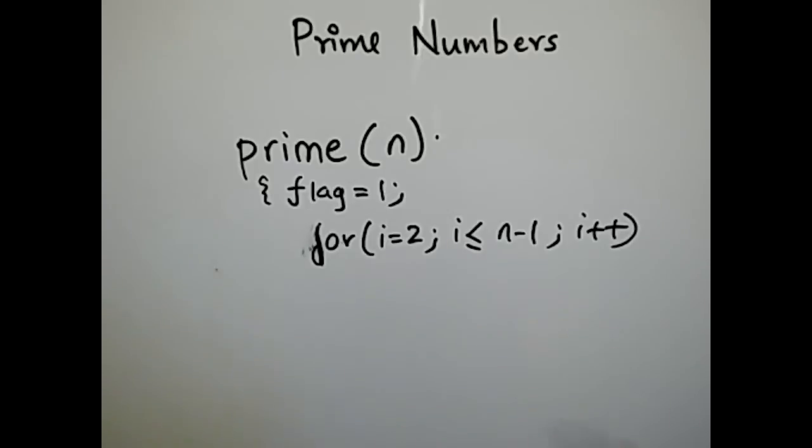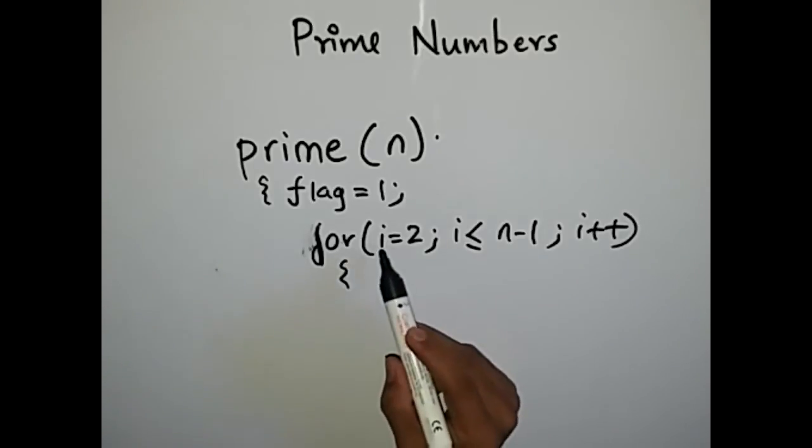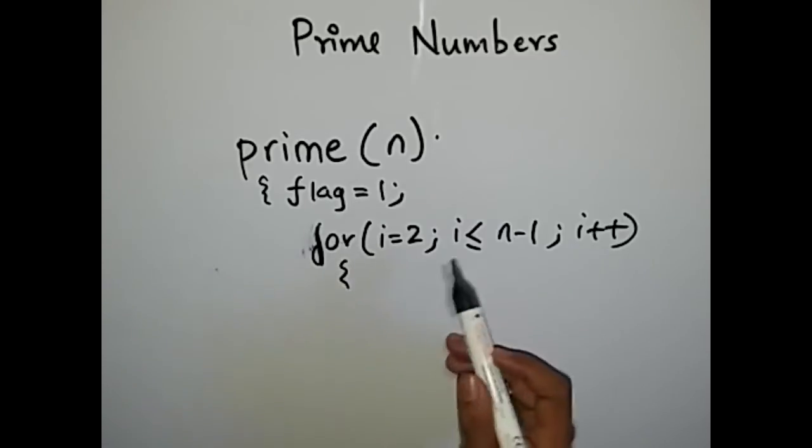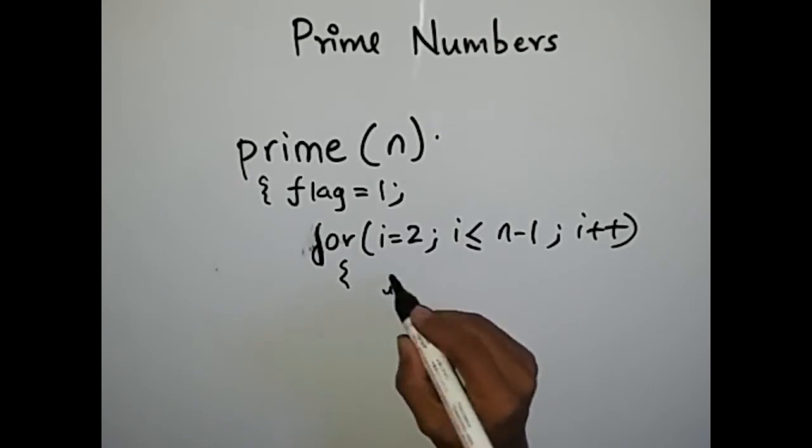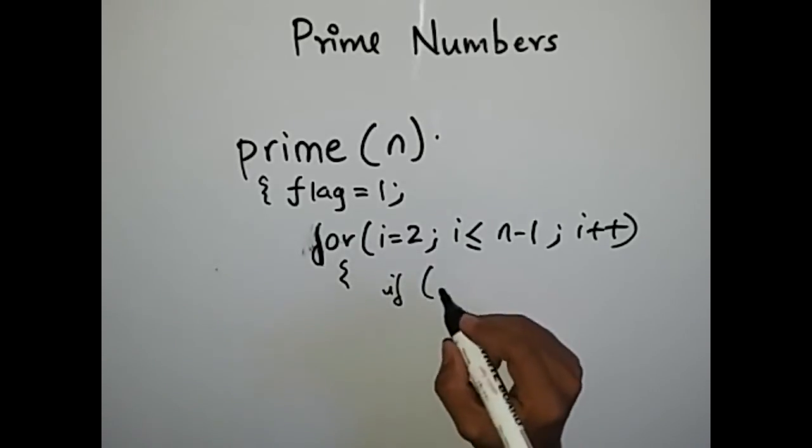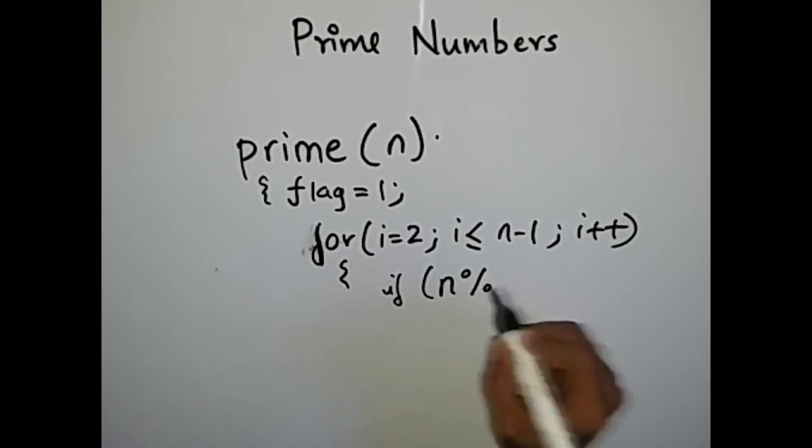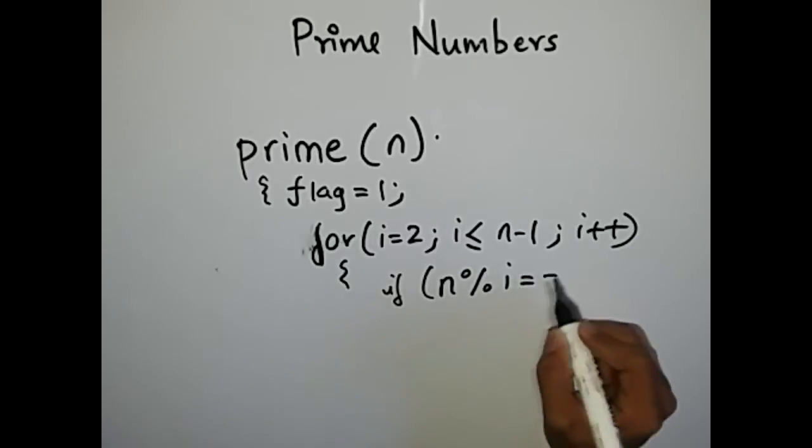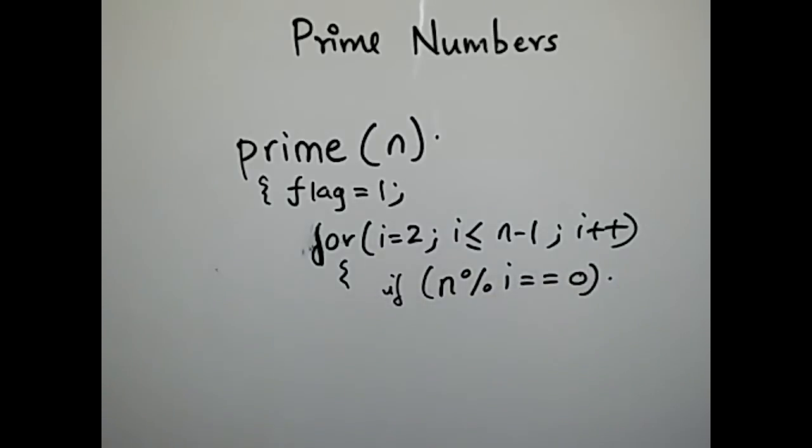In this logic, this number i goes from i equal to 2 to n minus 1. And in each and every step what we do is take n mod i and check whether it is equal to 0. In each and every loop what we check is whether the number n which is our input,